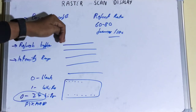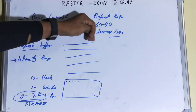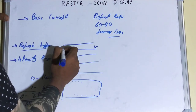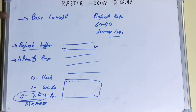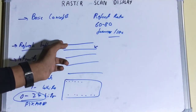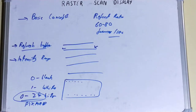The electron beam starts scanning from the beginning of a row and moves across. Once it finishes that row, it comes back from the left side — this is called horizontal retrace. Additionally, at the end of each frame, the electron beam returns to the top-left corner of the screen to display a new frame, which is called vertical retrace. These were the two important terms.